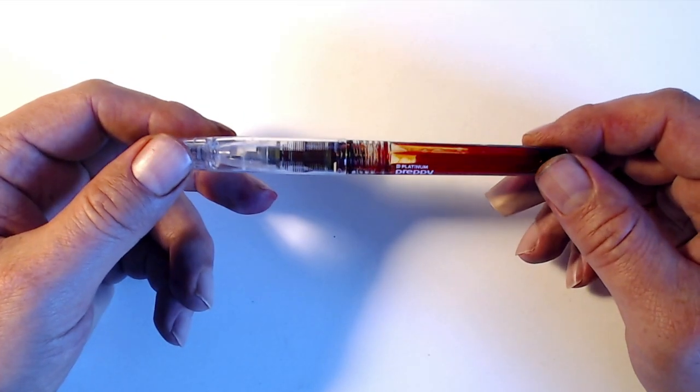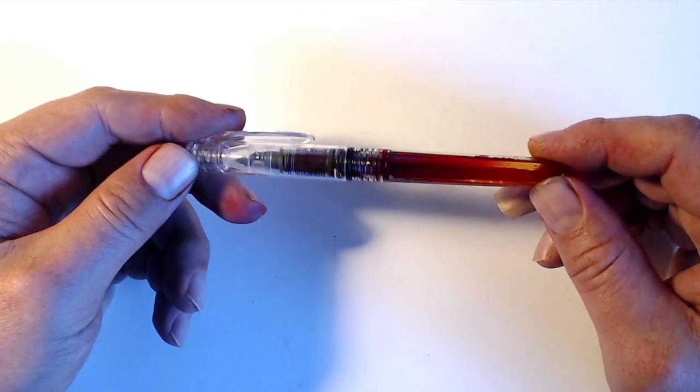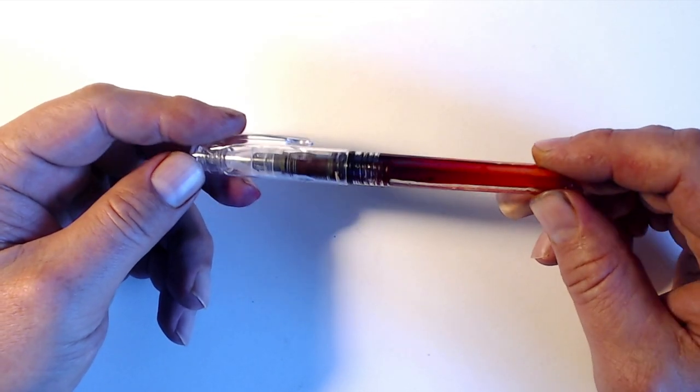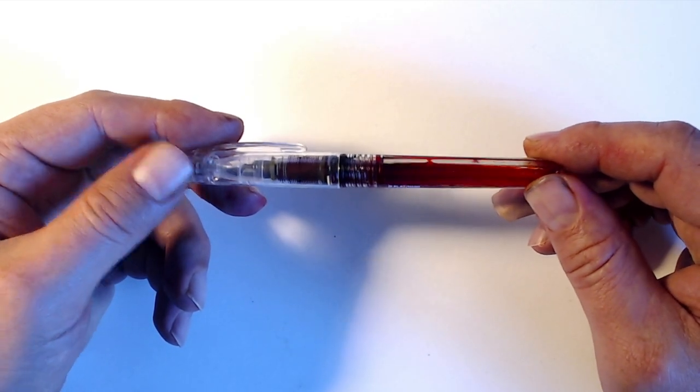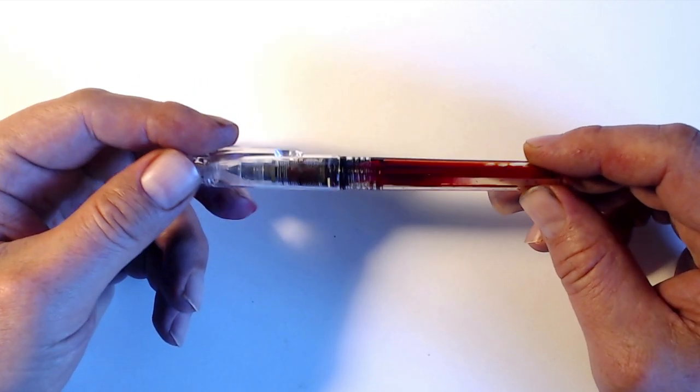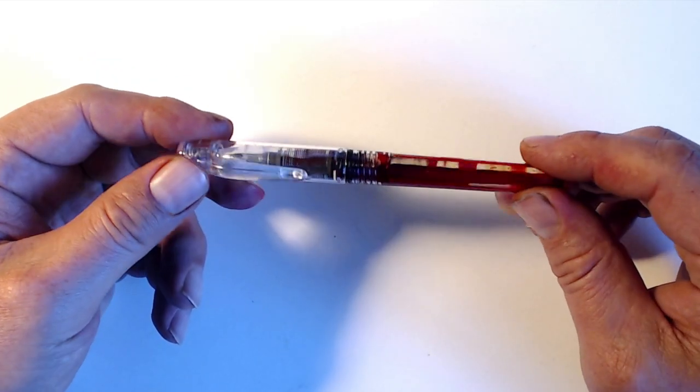While burping is certainly annoying, there are ways to mitigate it. Since the main culprit is expanding air, burping can be prevented by not allowing the barrel to get too empty. Of course, this negates the whole point of eyedropping, which is the ability to go a long time without having to refill. But I found that burping usually becomes a problem when the pen barrel is less than half full, and that's still quite a bit of ink to go through without refilling.